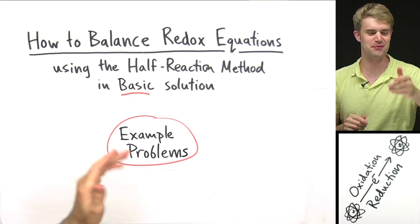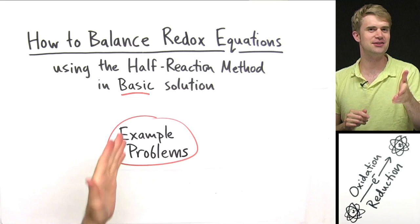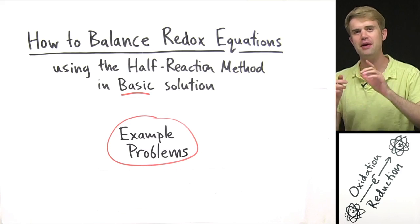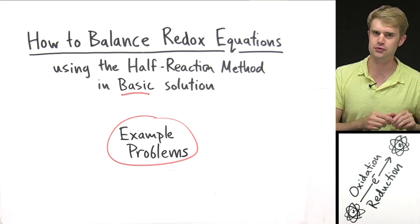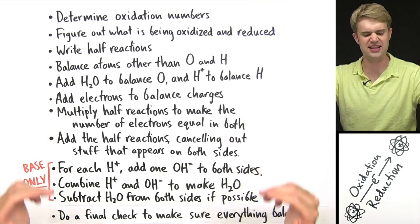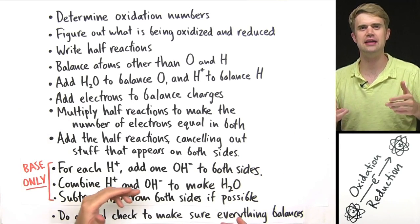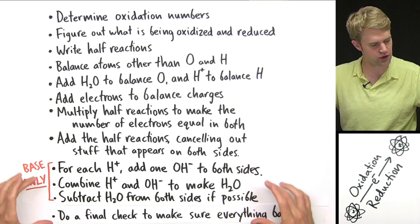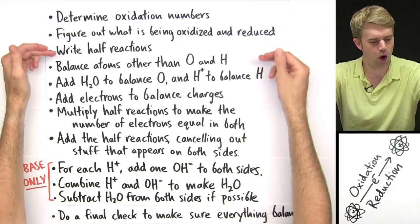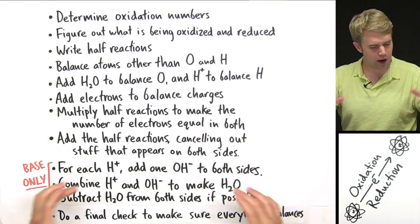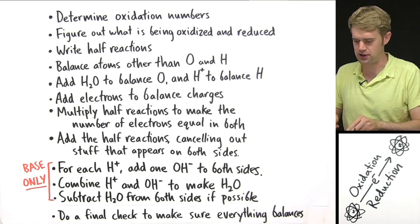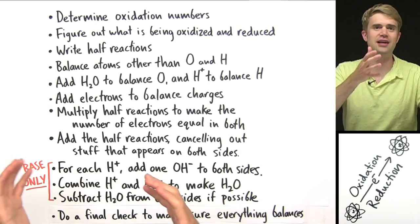I'm going to do two practice problems for balancing redox equations in basic solution, but they're going to be fast because we're just going to focus on the extra steps you use to balance in basic solution instead of in acidic solution. Most of the steps are the same ones you'd use for balancing in acidic solution, except for these three extra steps used only for basic solution. Whether balancing in acid or base, you always want to do a final check to make sure everything balances.